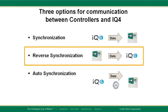With reverse synchronization, the data in the controller is transferred to IQ4. All controller data in IQ4, such as program and station details, are replaced with the data from the controller. If IQ4 is accessing an existing controller in the field, reverse synchronization is the preferred method.